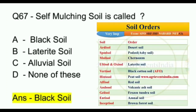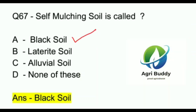Question 67. Self-mulching soil is called? A. Black soil. B. Laterite soil. C. Alluvial soil. D. None of these. And the answer is Black soil.